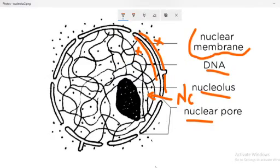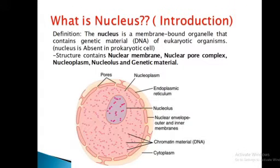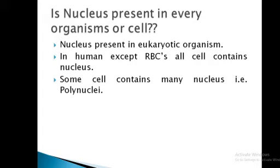Moving to the presentation. Nucleus is present in eukaryotic organisms. In humans, except RBCs, all cells contain a nucleus. Some cells contain many nuclei and are called polynucleic cells, like WBCs.